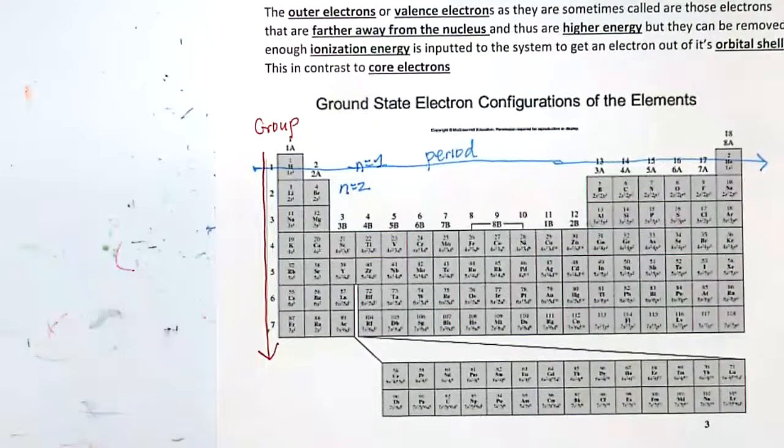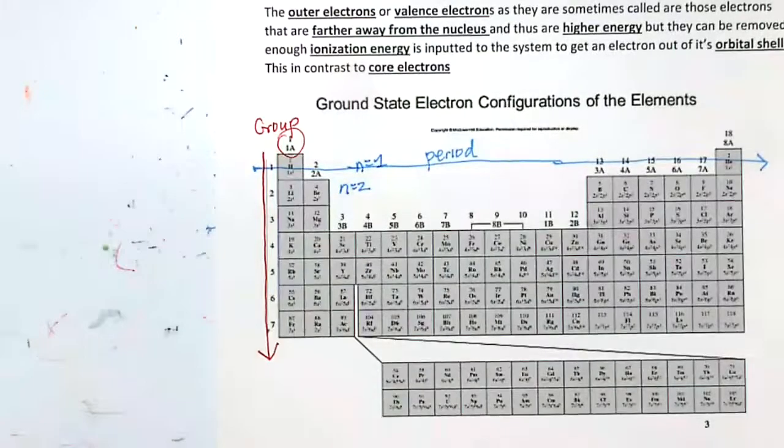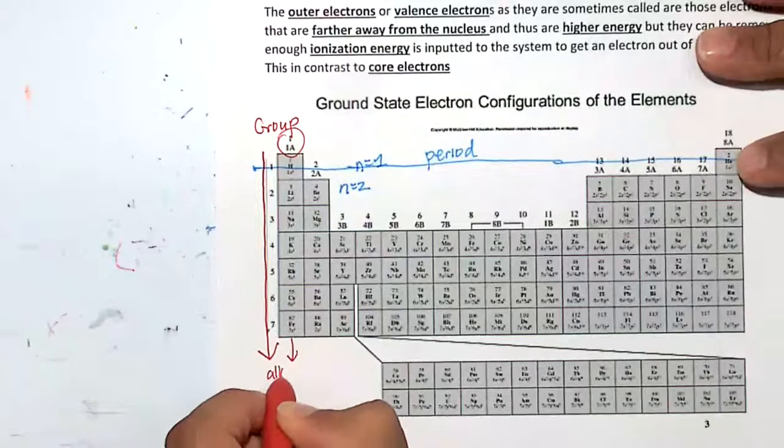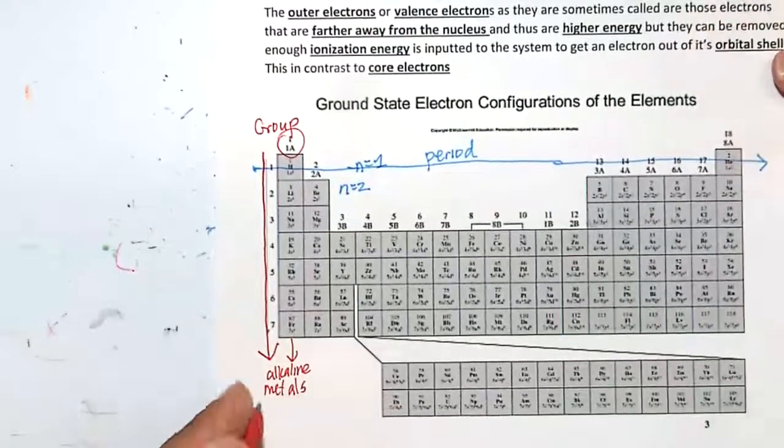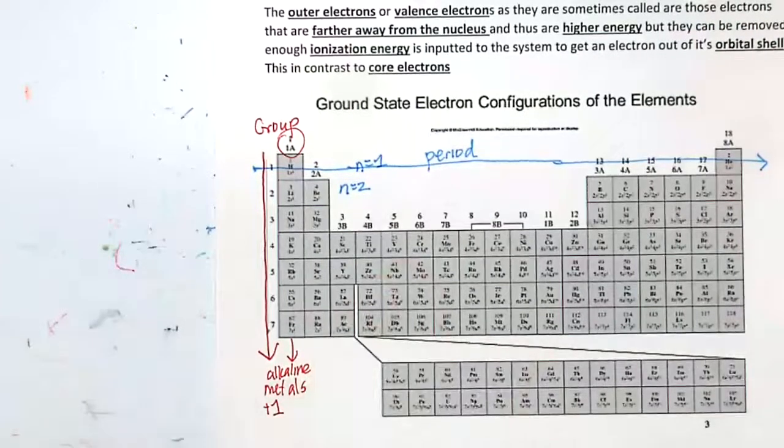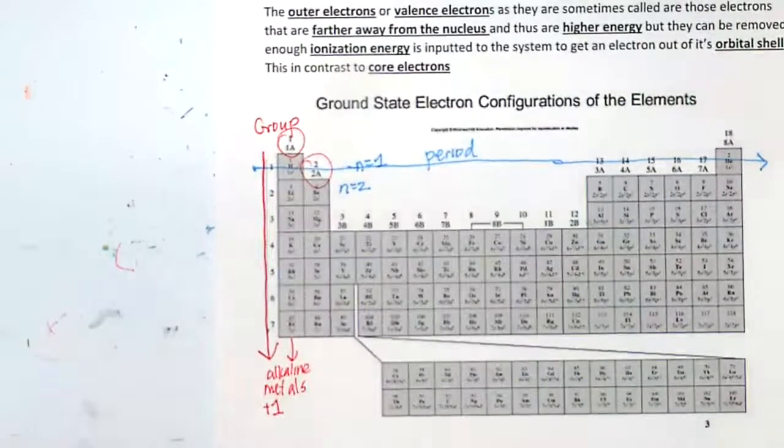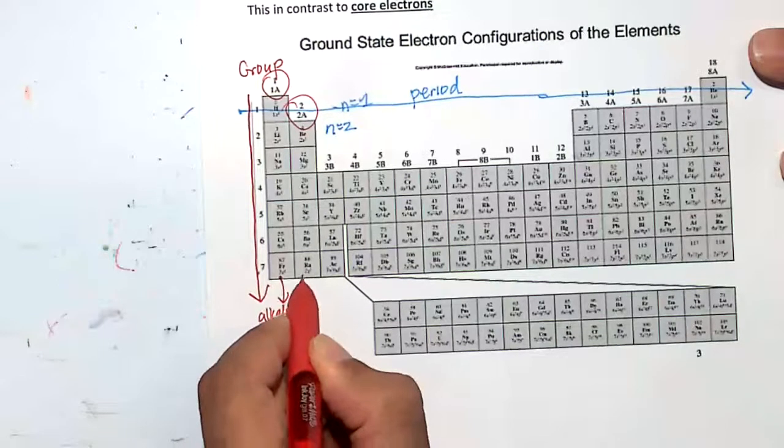We can have period one, period two, period three, period four, period five, and so on. Going down is a group. Some important groups: group one or 1A, these are called the alkali metals. They like to form plus one charge. These are the group two metals, called the alkaline earth metals.